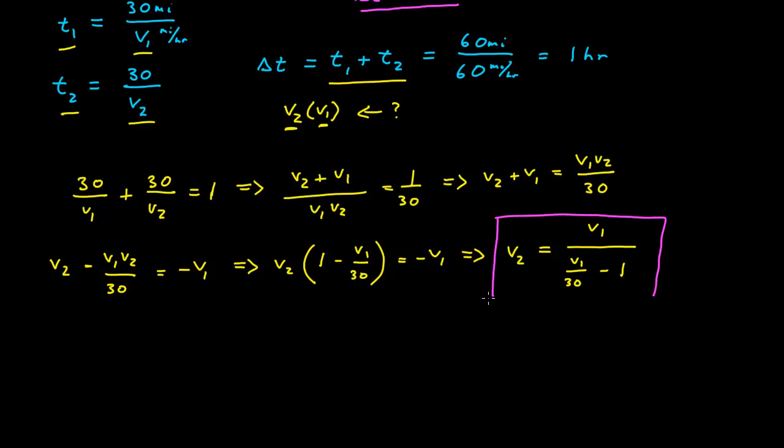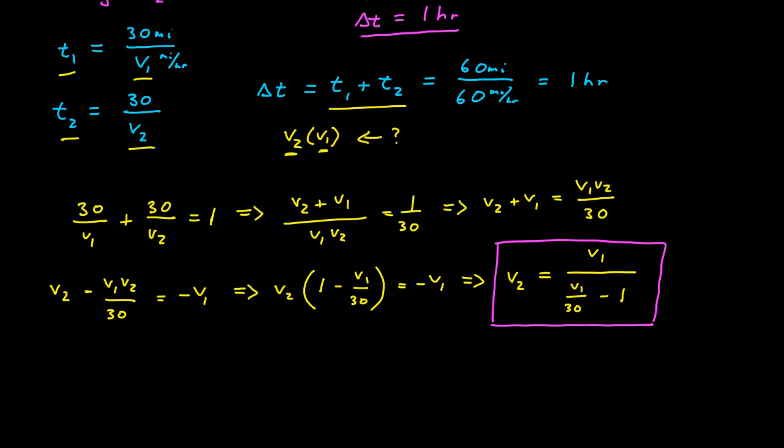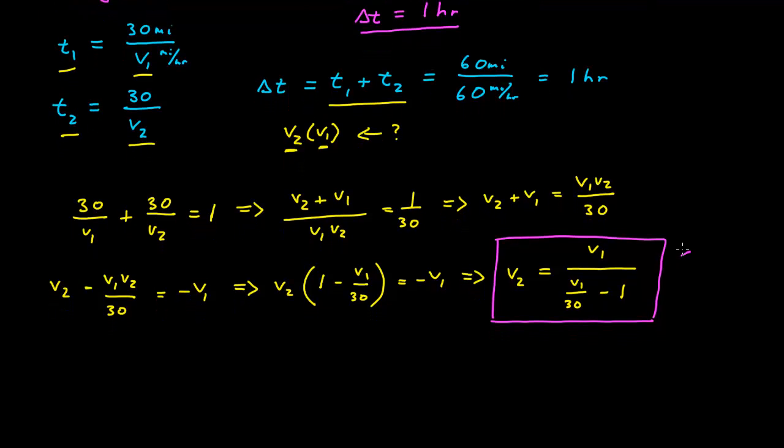And so this is the sort of thing that a scientist and engineer will do all the time. It's not nearly as useful to have an answer for a specific example as it is to have a general formula for any type of input. Now for any value of initial speed V1 for the first leg, I can calculate the speed V2 for the second leg such that the average velocity is 60 miles per hour.